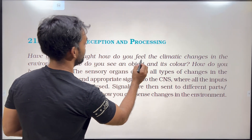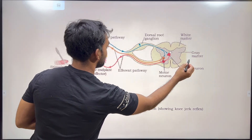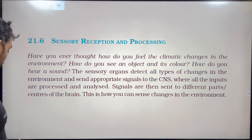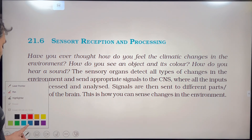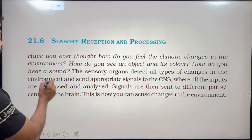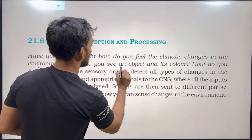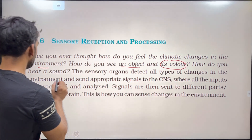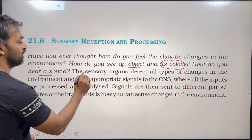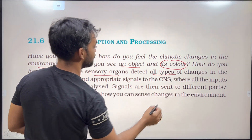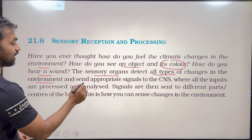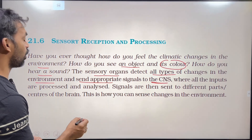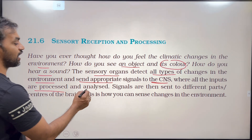Have you ever thought about how we feel climatic changes in the environment — whether the temperature is low or high? How do you see an object and its color? How do you hear a sound? The sensory organs detect all types of changes in the environment and send appropriate signals to the central nervous system, where all the inputs are processed and analyzed.